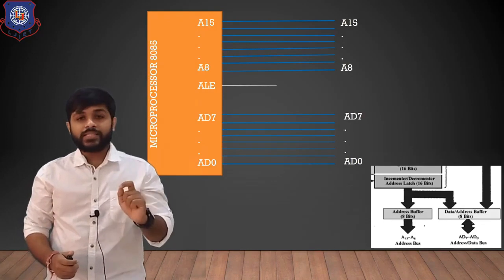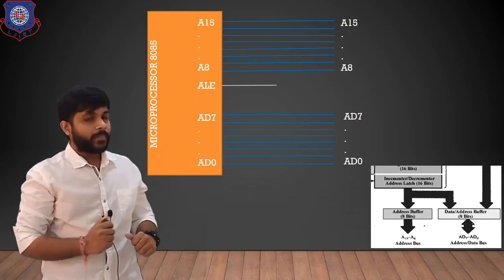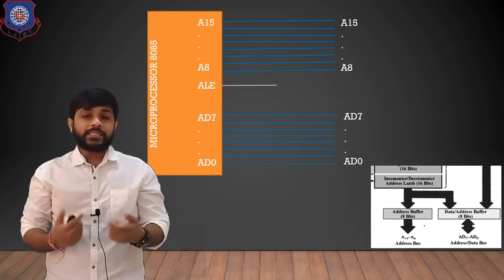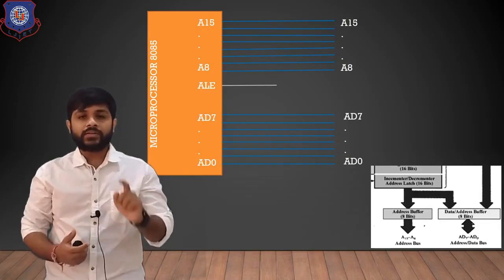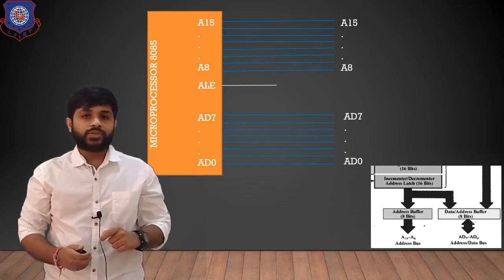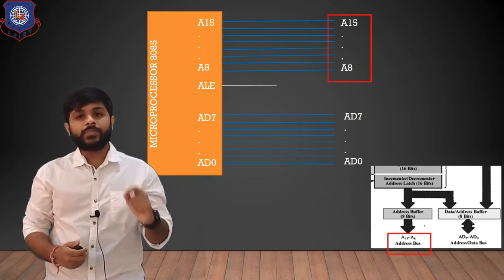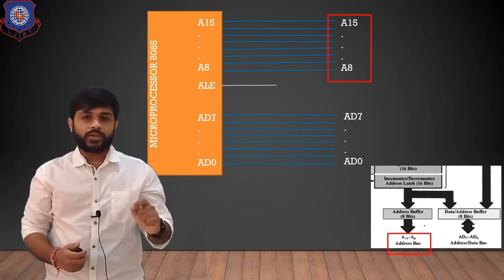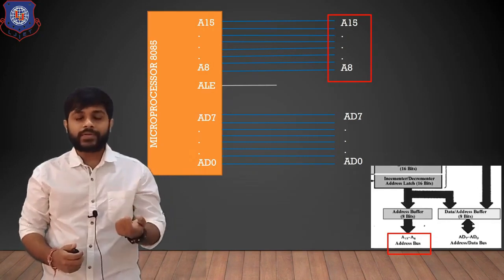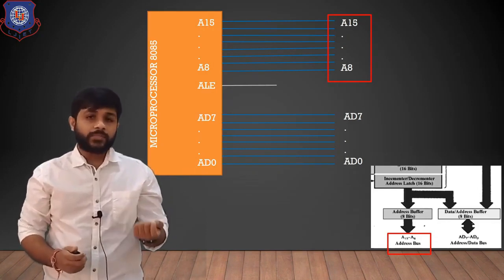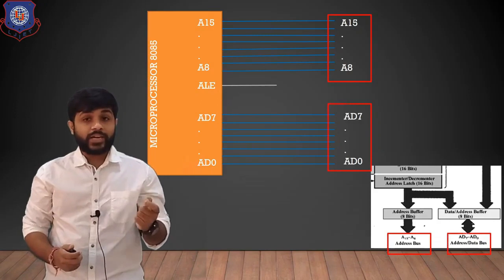You can see this is the microprocessor. The pins we are dealing with are given in this figure. As we have just discussed, the higher-order bus is the address bus, A8 to A15, but the lower-order bus is the combination AD0 to AD7.